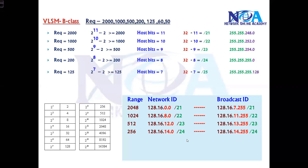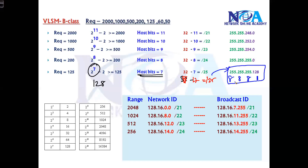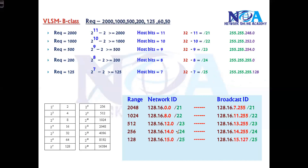The next requirement is 125. The possible size is 2 to the power of 7, which is 128, giving host bits of 7. Subtracting from 32 gives 25 network bits — slash 25. The equivalent subnet mask is 255.255.255.128. Since 14 is already used, this range starts at 15.0 and ends on 15.127, a group of 128 addresses with a slash 25 subnet mask.